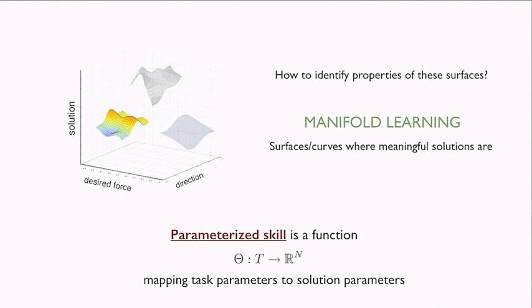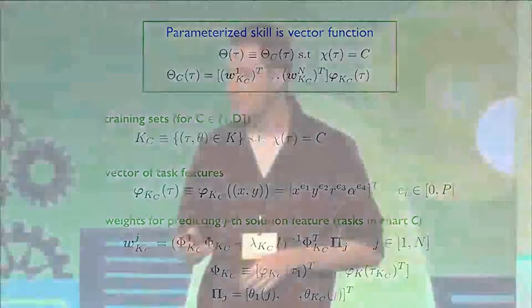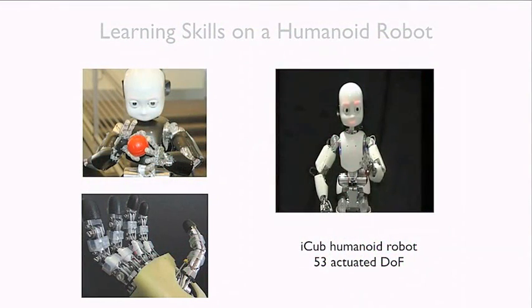If we have access to information about how the solution space looks, it becomes much easier to make good predictions for novel kicks — the surfaces of solutions tell you where valid solutions are and help narrow down the search. With that information we can train a parameterized skill: a vector function that takes task parameters as input — the kind of kick you want — and gives back the parameters that implement that kick. That's the idea.